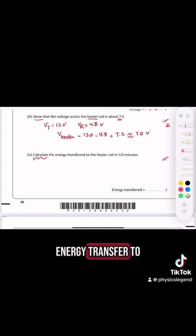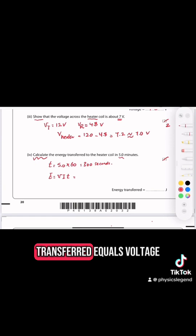Calculate the energy transferred to the coil in five minutes. Five minutes times 60 gives us 300 seconds. Then the energy equals V times I times T. The energy transferred equals voltage.